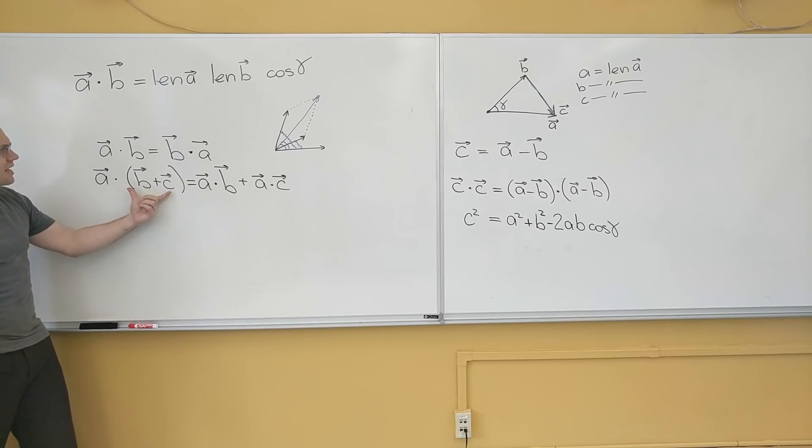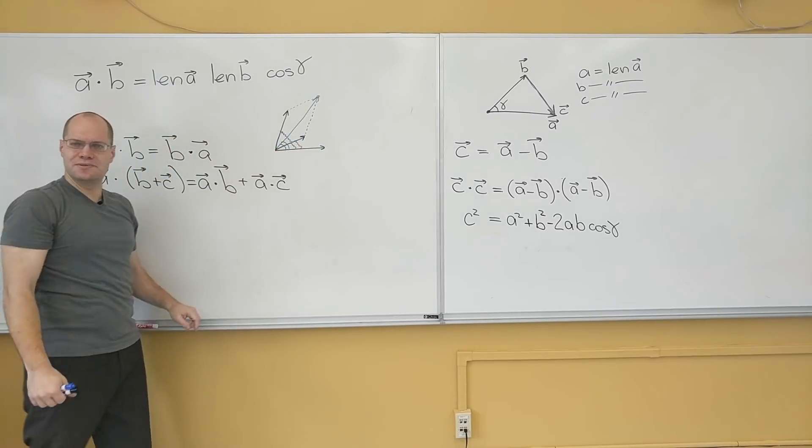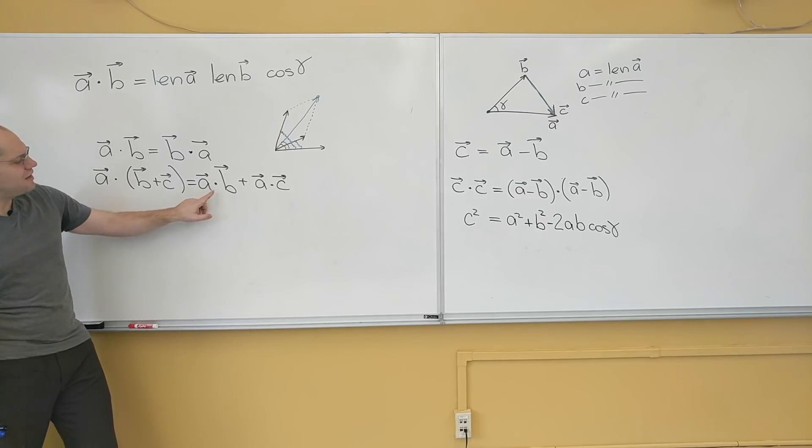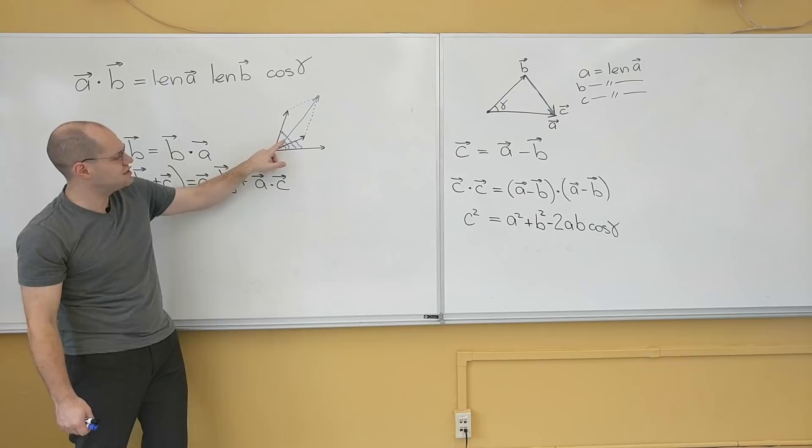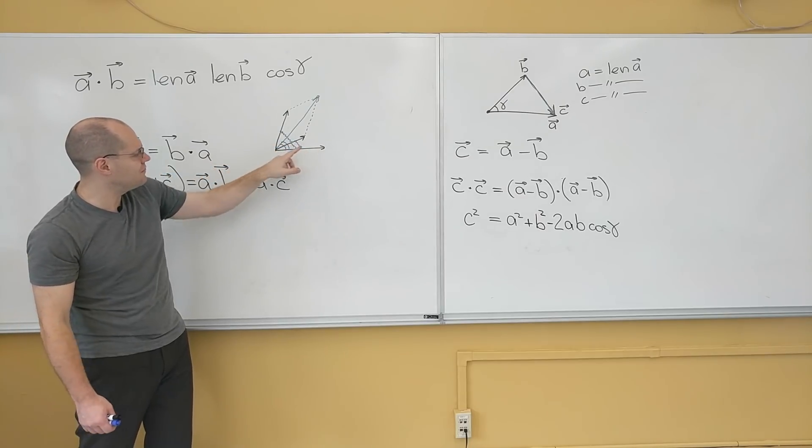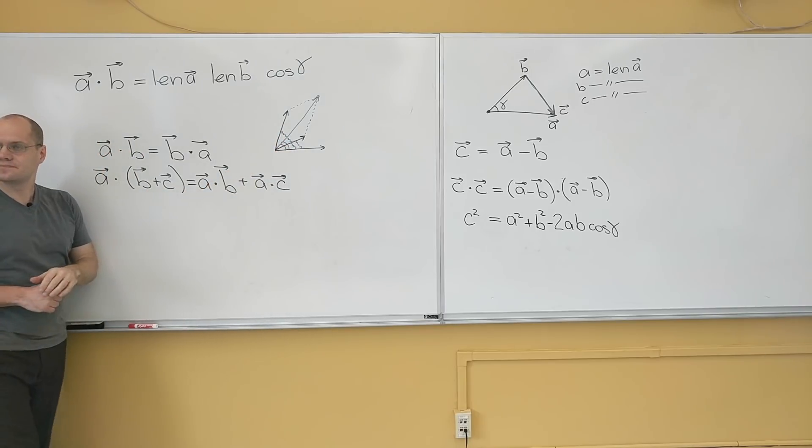Do you see that it's not at all obvious? I just interpreted what this would mean. The length of a times the length of b plus c times the cosine of the angle between them. Equals the length of a times the length of b times the cosine of this angle plus the length of a times the length of c times the cosine of the angle between them. So not at all obvious.